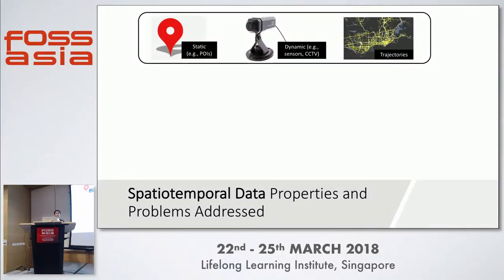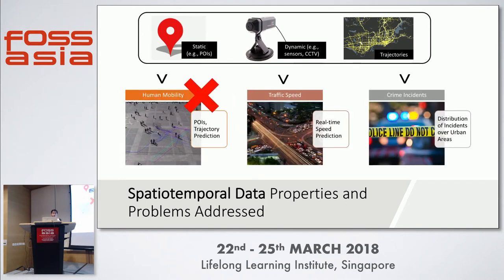Trajectories are probably the most complex type of spatial-temporal data because they are sequences of geospatial locations and timestamps of moving objects over space and time, such as GPS trajectories of a fleet of taxis or trajectories of massive movement of people over urban space. A lot of these real-world problems in urban environments are a mixture of different data types, making them even more complex. Certain methods like cross-domain data fusion combine these into one unifying dataset.